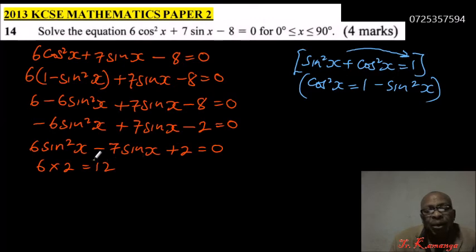And when you multiply, you get 12. So this will be -4 and -3. -4 times 3, that is 12. -3 plus -3, that will be -7.